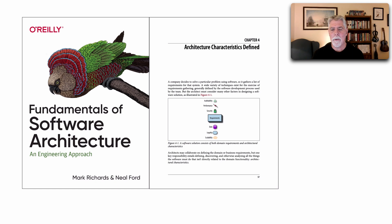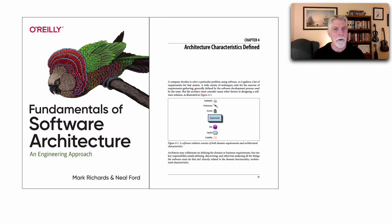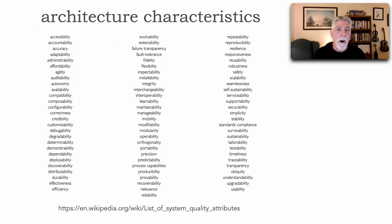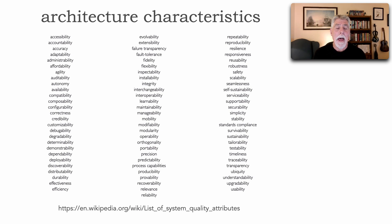Architectural characteristics are what some people call nonfunctional requirements, NFRs, the ilities of architecture, and also system quality attributes. I don't care for any of those phrases — I really like the term architectural characteristics, and there are a lot of them. Things like scalability, performance, reliability, and fault tolerance are good examples of what I'm referring to as an architectural characteristic.